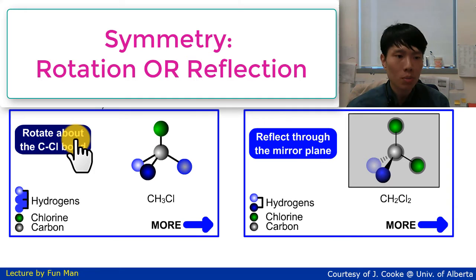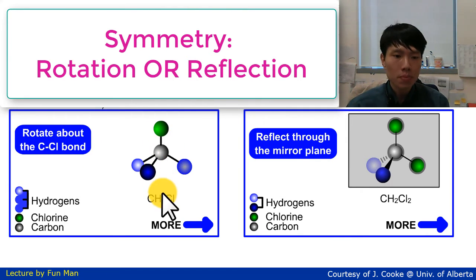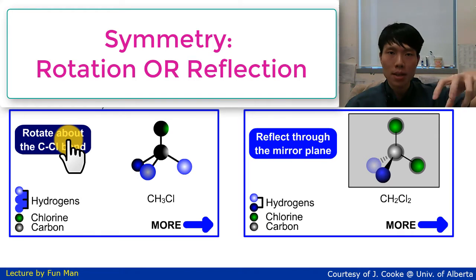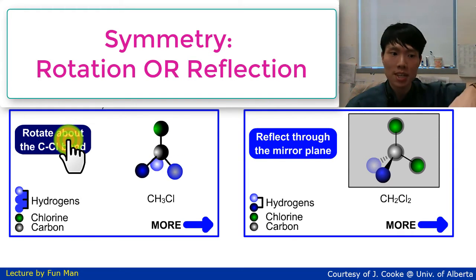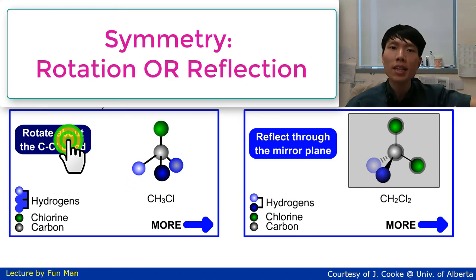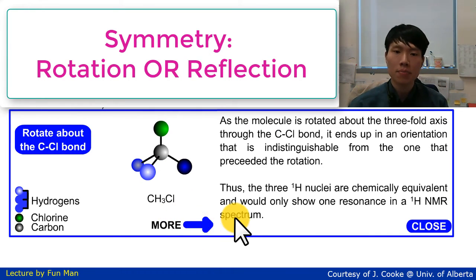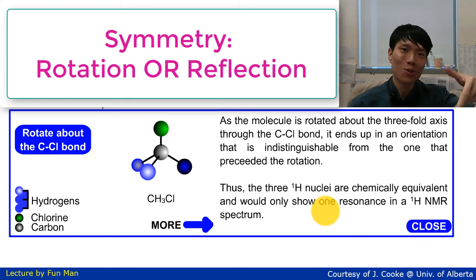For chloromethane, rotation about the C–Cl bond shows that the three protons are equivalent — each fits into the gap occupied by the previous proton. That is why they are the same, and hence you only show one signal with no splitting. The molecule is indistinguishable before and after the rotation.